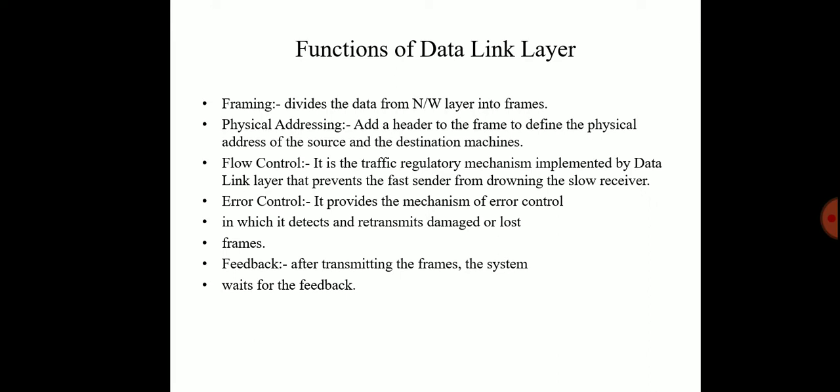The second one is physical addressing: it adds a header to the frame to define the physical address of the source and destination machines. Number three is flow control: it is the traffic regulatory mechanism implemented by the data link layer that prevents a fast sender from overwhelming a slower receiver.